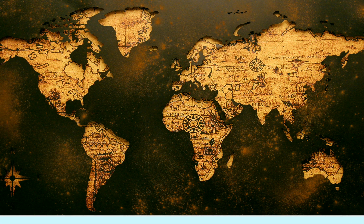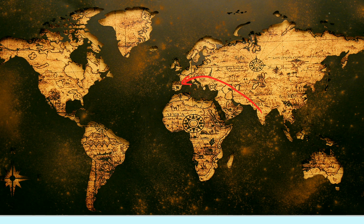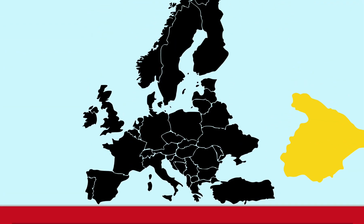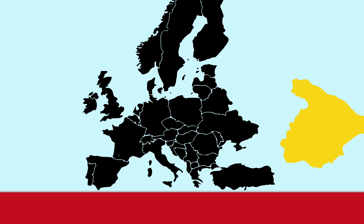This is Spain's map. This is the Atlantic Ocean. On one side is Norway, and on its side is Portugal.